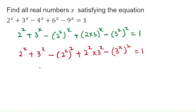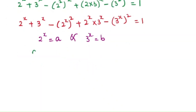Let's take 2^x = a and 3^x = b. Then we have: a + b - a² + ab - b² = 1.